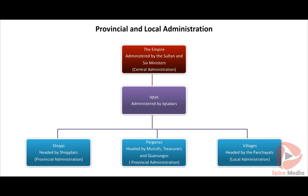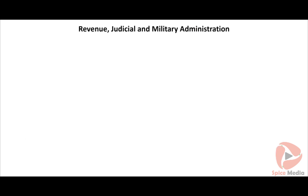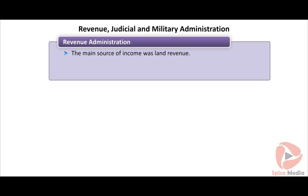The decline of the Sultanate started with the invasion of Timur during the rule of the Tughlaq dynasty. The empire was headed by the Sultan with immense powers. Six ministers were appointed to help him in administering the empire. For easy administration, the empire was divided into numerous ikhtas, headed by ikhtadas or governors. Ikhtas were further divided into shikhs, parganas and villages. The shikhs were headed by shiktas. The parganas were headed by munsifs known as ammels, treasurers and kwanangos.